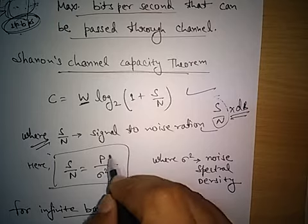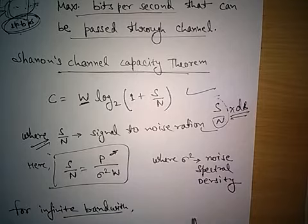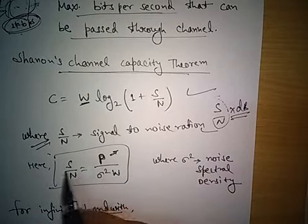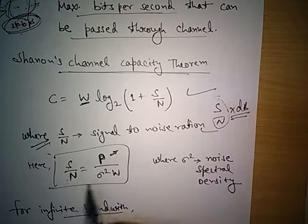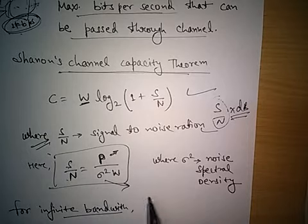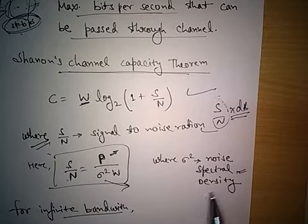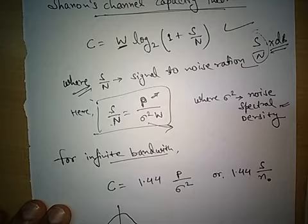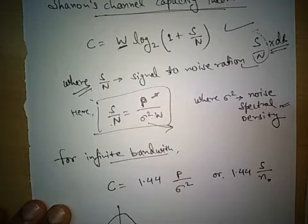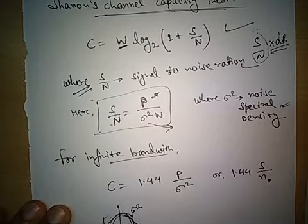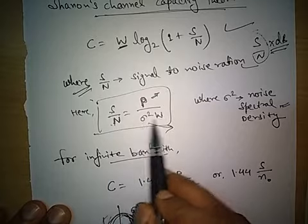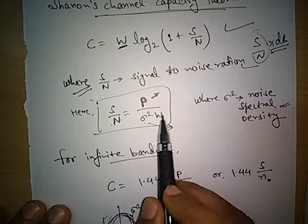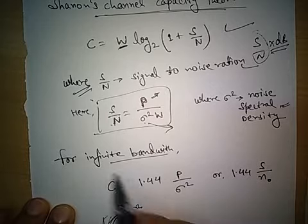The S/N ratio can be further written as P/(σ²W), where P represents the signal power. In the question, P is used for signal power, though S can also be used. The noise power N equals σ²W, where σ² is the noise power spectral density. For additive white Gaussian noise after filtering to bandwidth W, the spectral density σ² multiplied by the bandwidth W gives the total noise power.